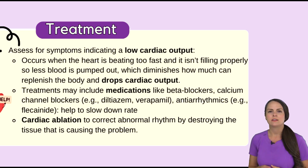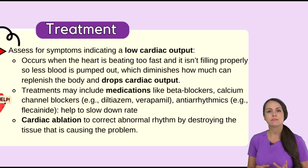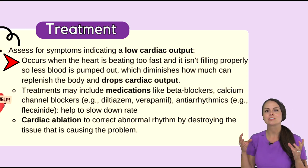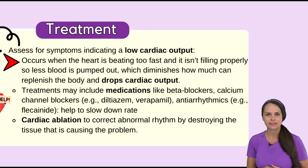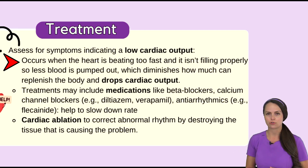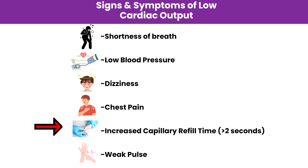What's our role as a nurse with this rhythm? First, we want to assess our patients and see if they're having signs and symptoms. A problem with junctional tachycardia is that the heart is beating extremely fast. When the heart beats too fast, it doesn't fill like it should, we're not pumping out as much blood, and cardiac output drops. Look for signs and symptoms of low cardiac output, including shortness of breath, low blood pressure, dizziness, chest pain, increased capillary refill time, and weak pulse.